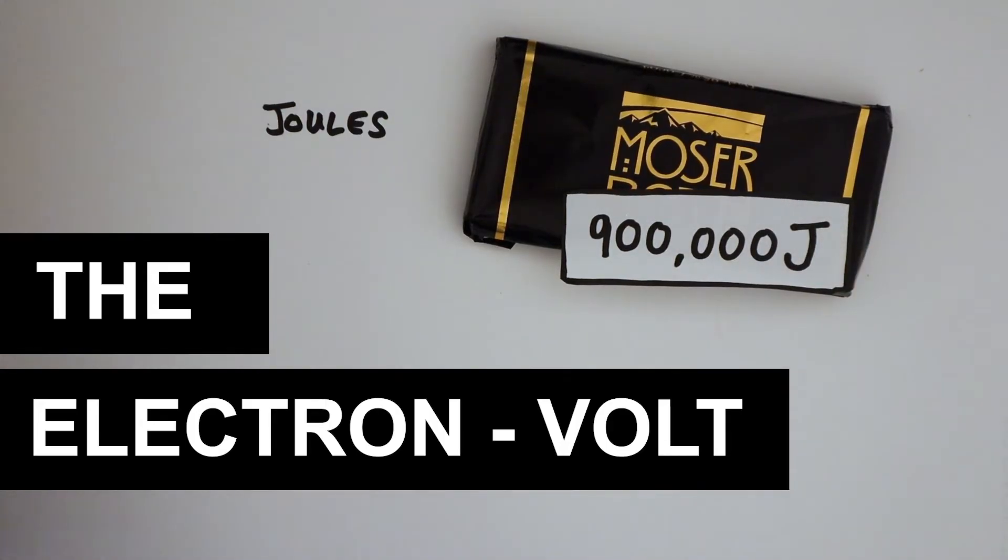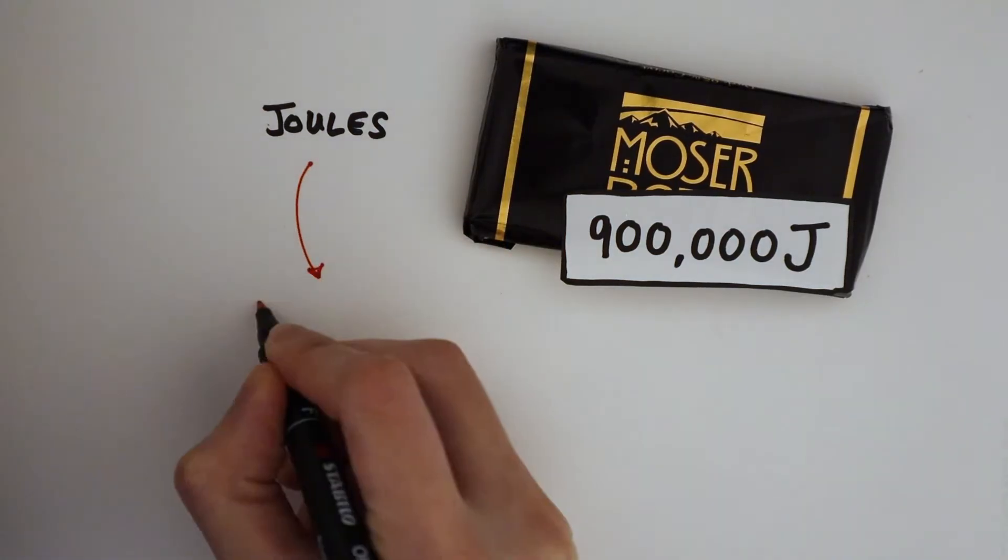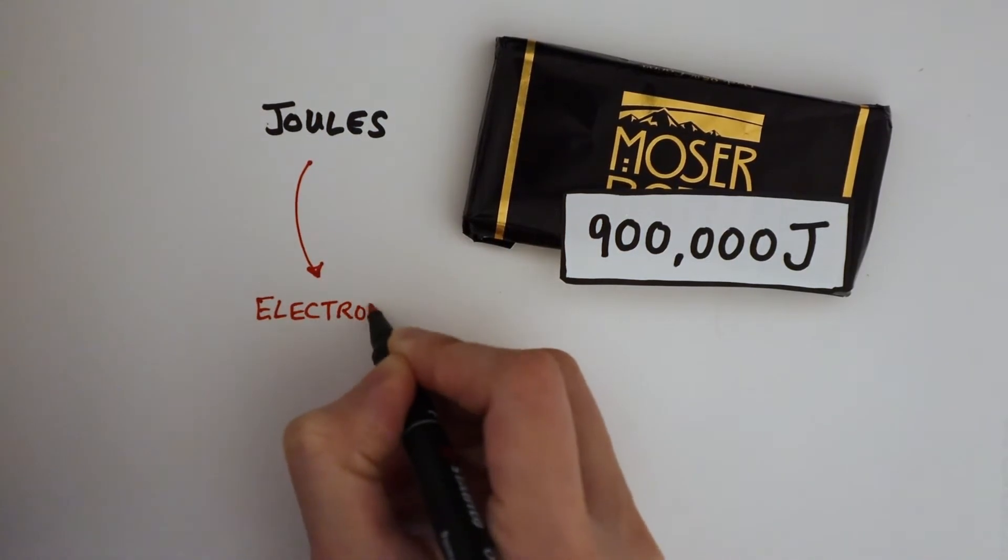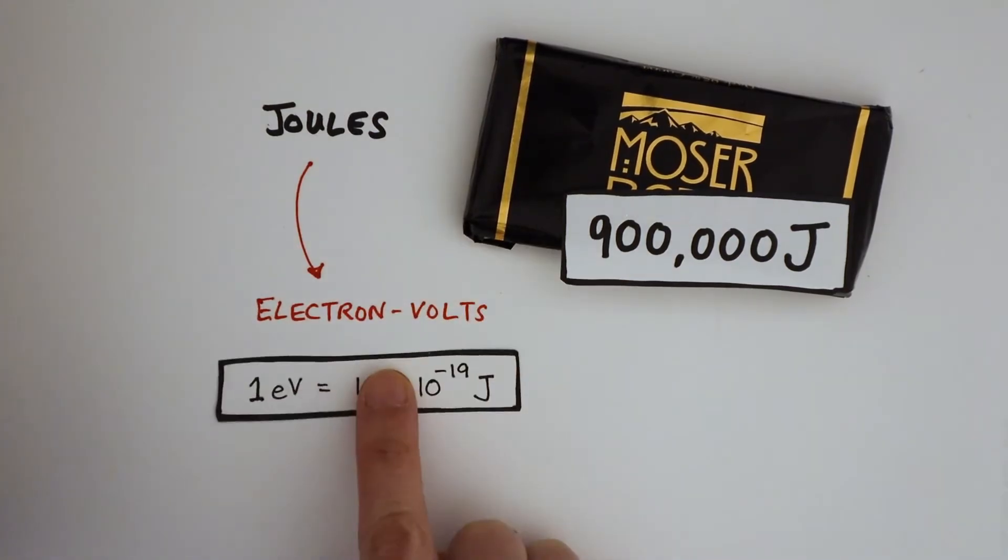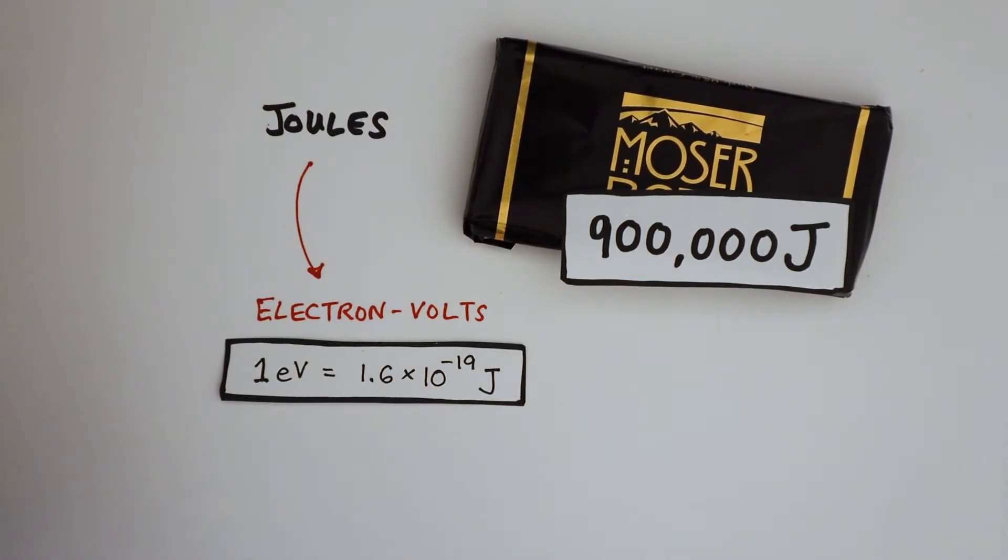But in quantum physics, we need to measure energy in a much smaller unit. So we decided to come up with another unit known as the electron-volt. One electron-volt is equivalent to 1.6 times 10 to the minus 19 joules.